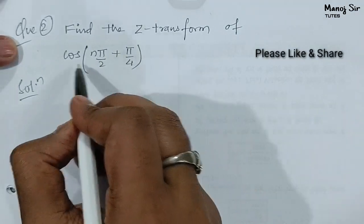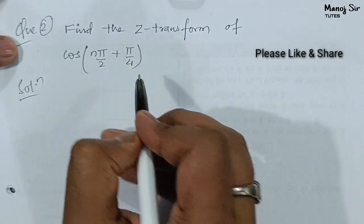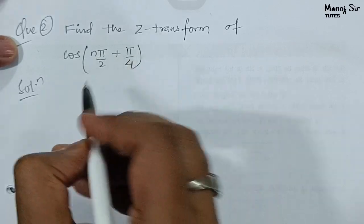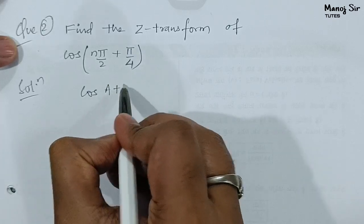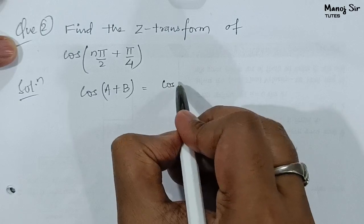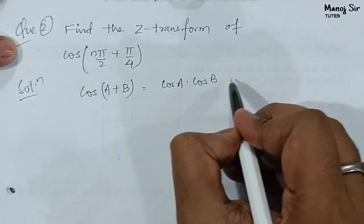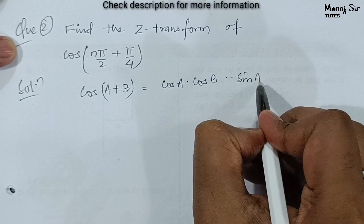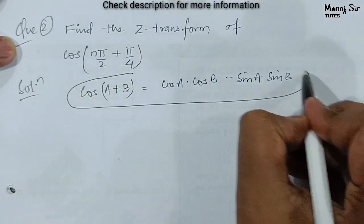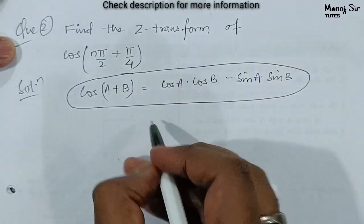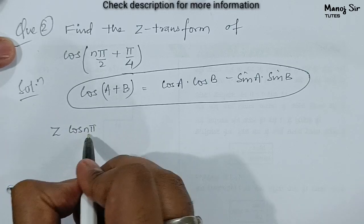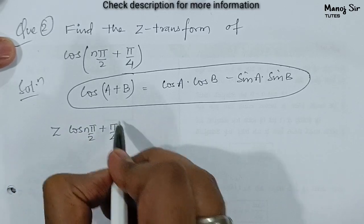We need to find the Z transform of cos(nπ/2 + π/4). First of all, we need to know the formula for cos(a + b). The formula is: cos(a + b) = cos(a)·cos(b) − sin(a)·sin(b). Now applying this to the Z transform of cos(nπ/2 + π/4).